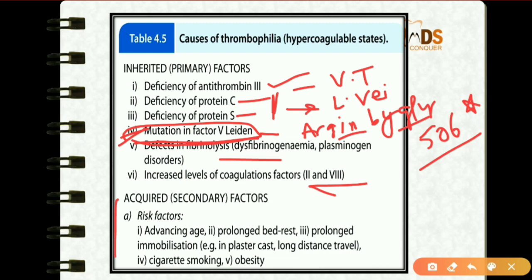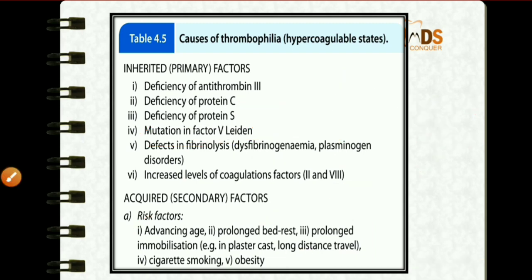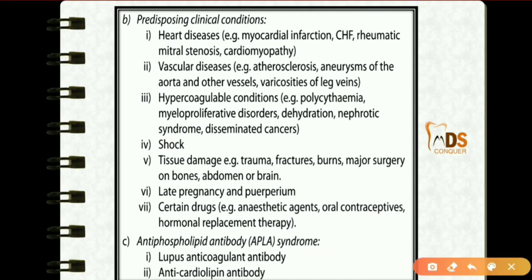Acquired or secondary factors leading to thrombophilia include advanced age, prolonged bed rest, prolonged immobilization, cigarette smoking, and obesity. Other predisposing clinical conditions include heart diseases, vascular diseases, hyperviscosity conditions like polycythemia and myeloproliferative disorders, dehydration, shock, tissue damage, late pregnancy, and certain drugs like anesthetic drugs, oral contraceptives, and hormonal replacement therapy. Antiphospholipid antibody syndrome — consisting of lupus anticoagulant antibody and anticardiolipin antibody — is also a cause.